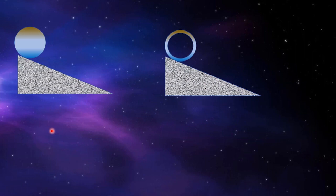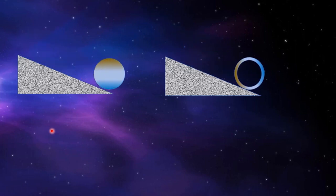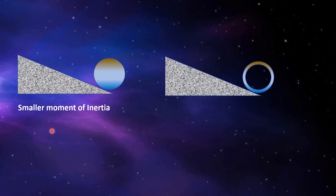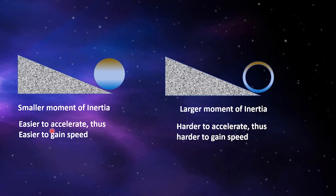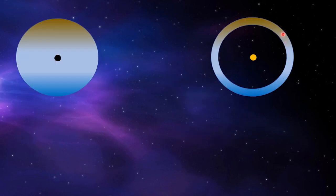The concept of moment of inertia is best demonstrated by the rolling experiment. You have two identical inclined planes, each with a solid cylinder and a hollow cylinder of the same mass and same radius at the top. When you release both cylinders, the solid cylinder rolls down faster than the hollow one. This is because the solid cylinder has a smaller moment of inertia, while the hollow cylinder has a larger moment of inertia, making it harder to accelerate and gain speed.